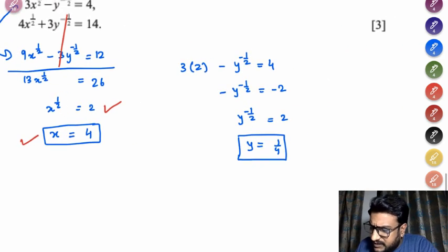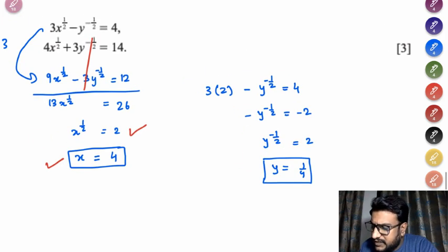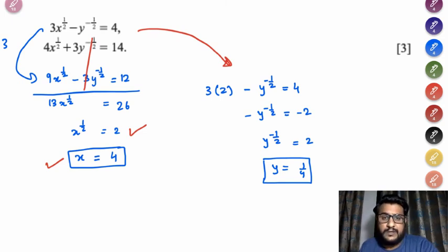Now once you know the value of x you can substitute in any of the given equation, I am using the first equation over here. So 3 times 2 minus y to the power -1/2 equals to 4. If you simplify, taking 6 on that side, negative 2, negative negative cancel out, so y to the power -1/2 equals to 2.